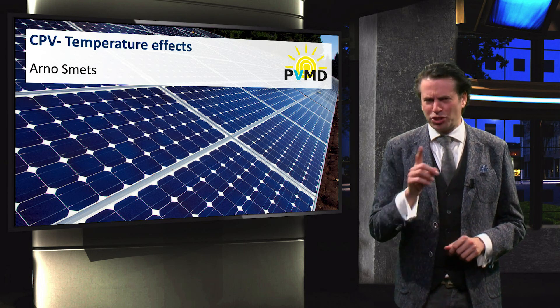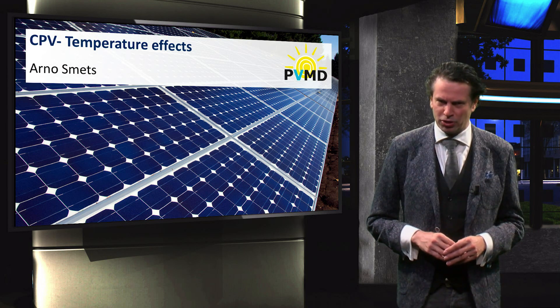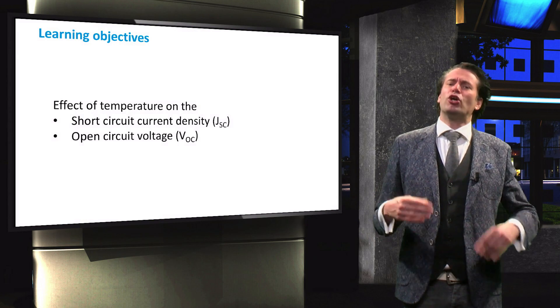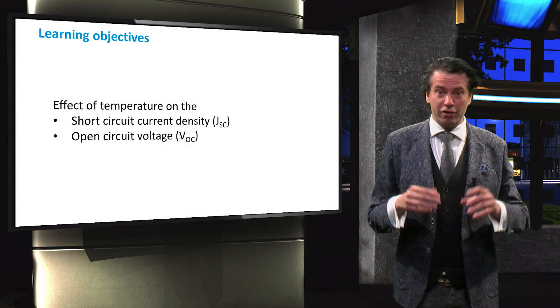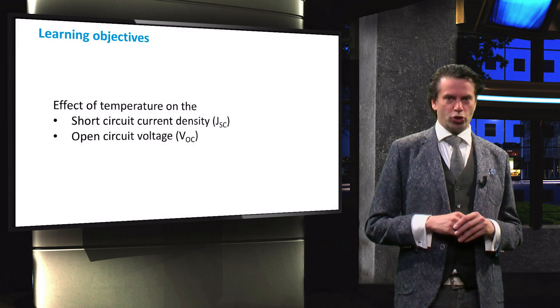In this final video about Concentrator PV, we will discuss the effect of temperature on the cell performance. You will learn how the cell temperature influences the short circuit current density and the open circuit voltage. During solar cell operation, charge carriers are generated due to illumination and thermal vibrations in the lattice. Since we are interested in the effect of the cell temperature on the solar cell performance, we will focus on the thermal charge carrier excitation in this video.